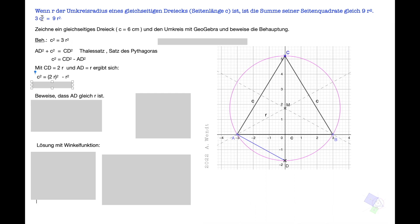Und das war ja unsere Behauptung. Wir sind zwar von 3C² gleich 9R² ausgegangen, aber wenn wir durch 3 teilen, haben wir ja diese Behauptung. Und damit stimmt der Satz.